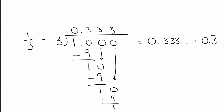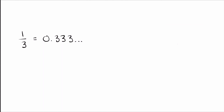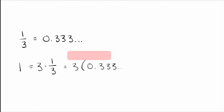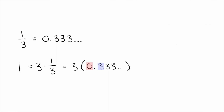Let's use that to prove that 0.9 repeating is 1. I'm going to rewrite 1 using this. If we take 1/3 and multiply it times 3, of course we know that equals 1. But 1/3 is the same as 0.3 going on forever. So what do I get when I multiply that by 3? I multiply 3 times each of the individual digits, and that gives me 0.9, another 9, another 9 — going on forever.